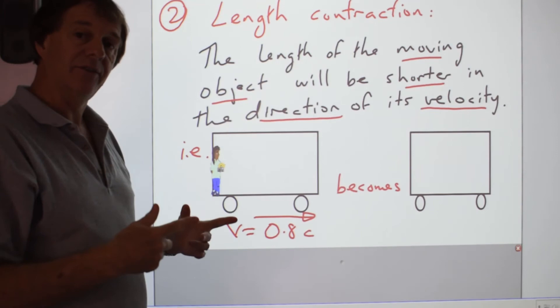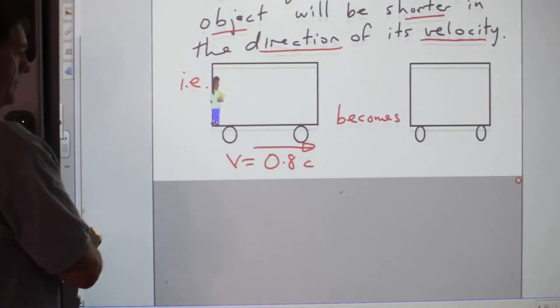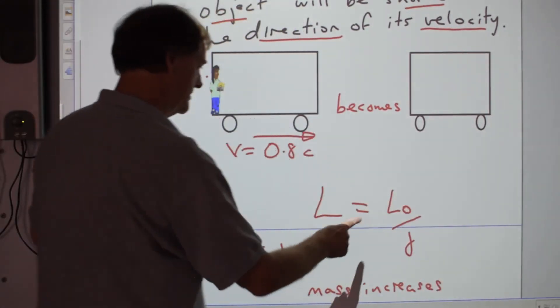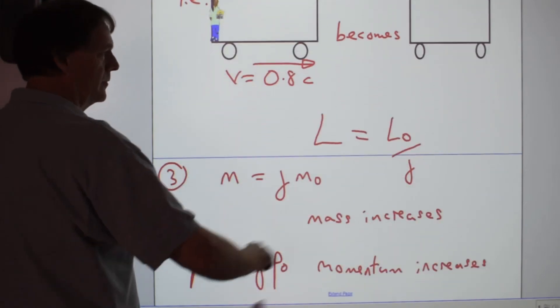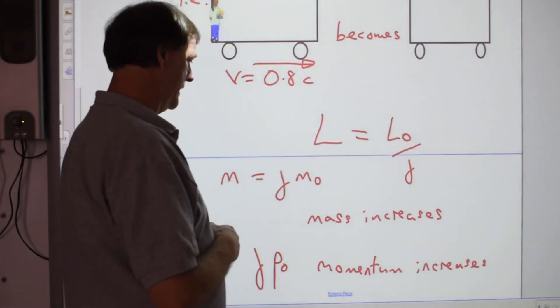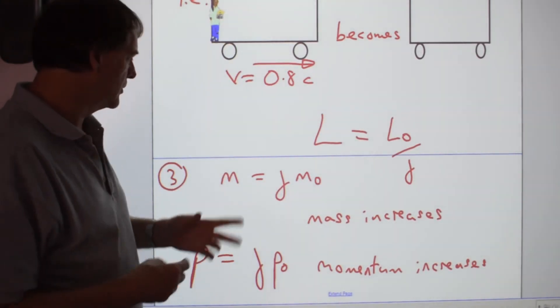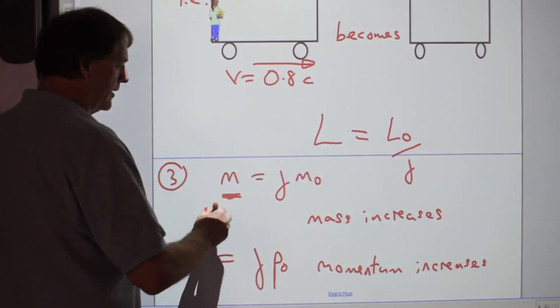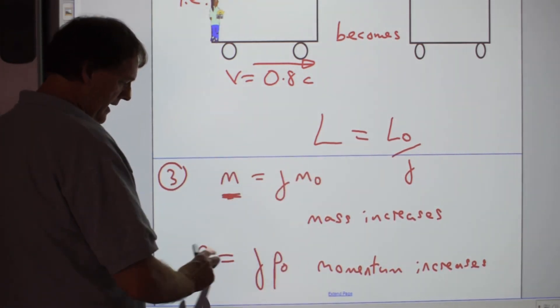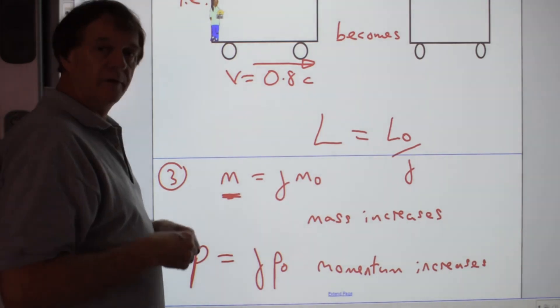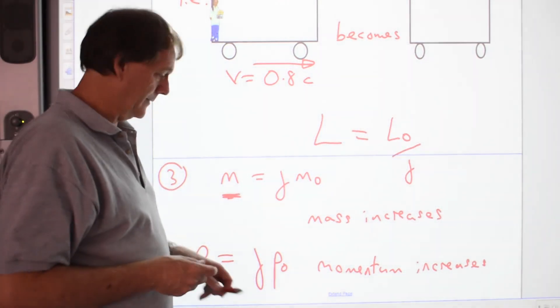If you want to work out how much that is, you use the gamma part of it, which is this part here. But this time you divide it because length is going to get shorter. It's worth pointing out that in future lessons we look at the fact that the actual mass from an outside observer will look bigger, and the momentum will actually look bigger as well to the stationary observer.